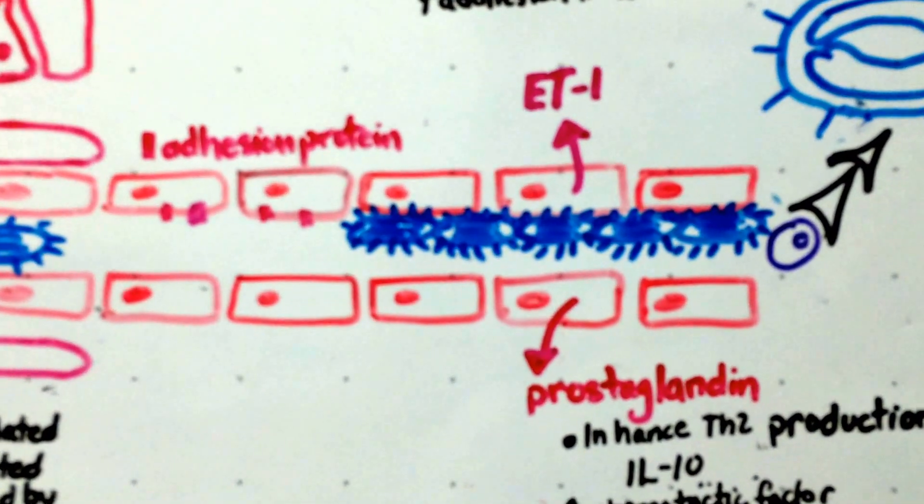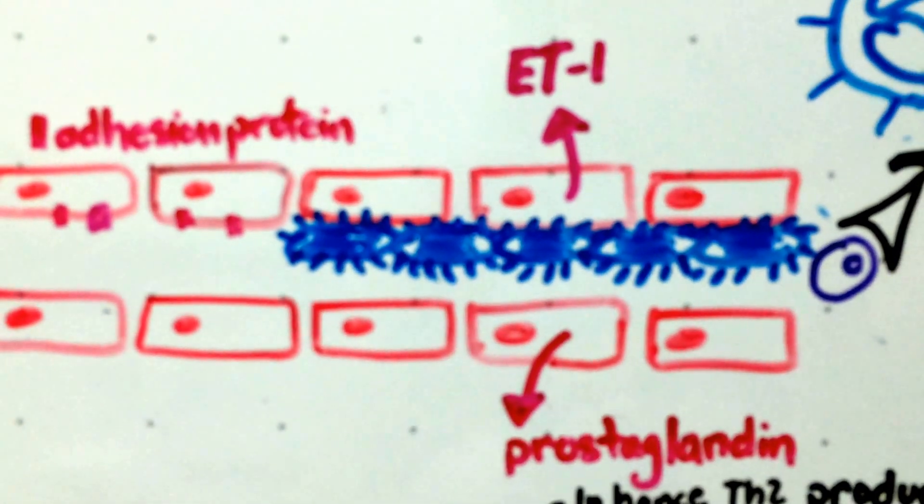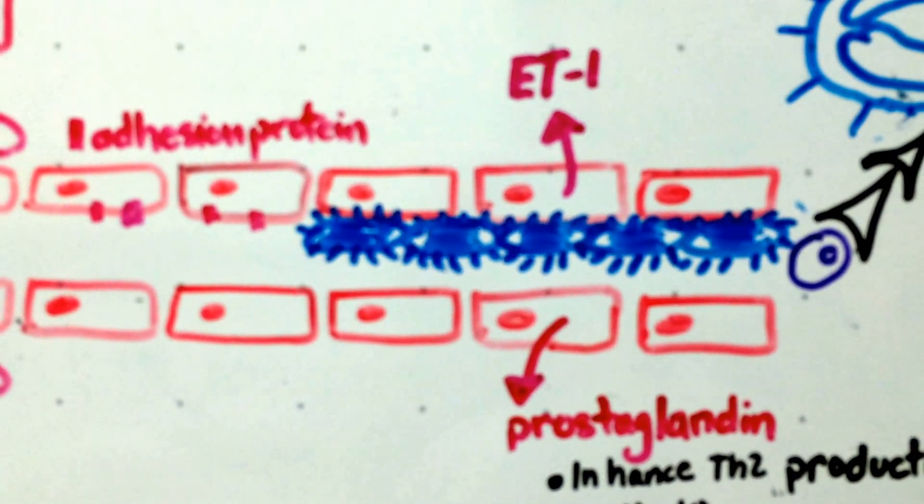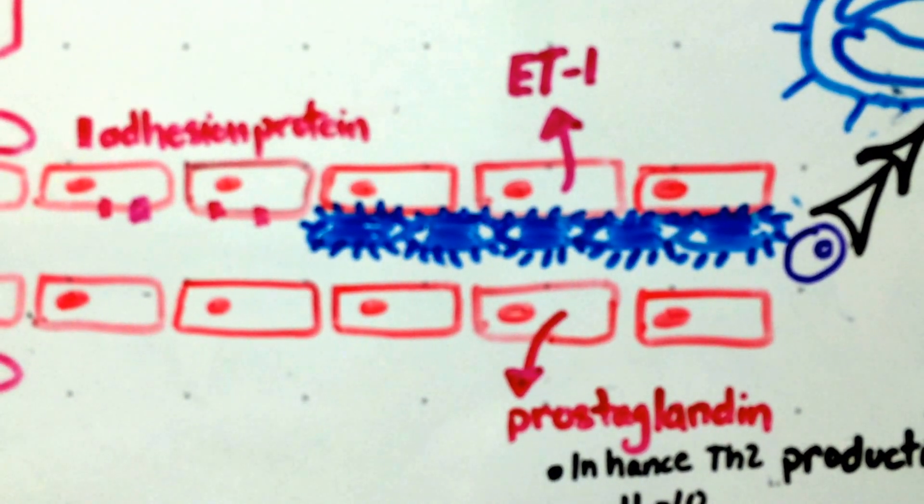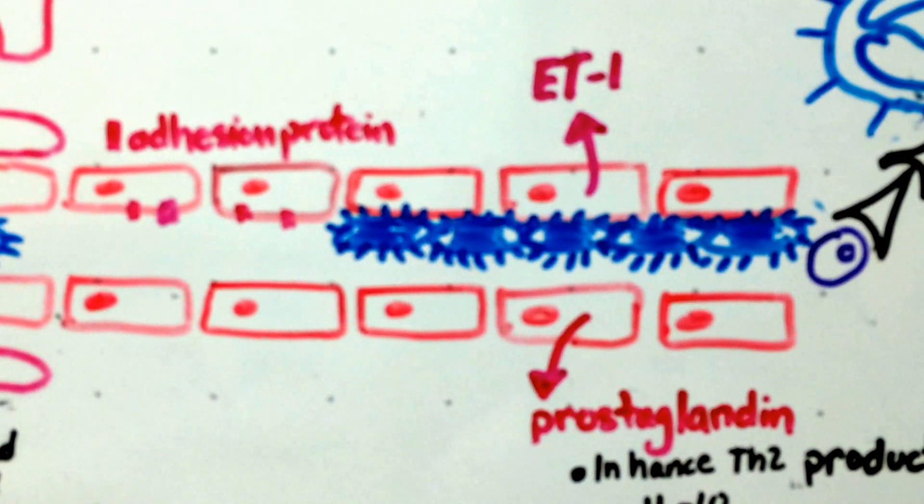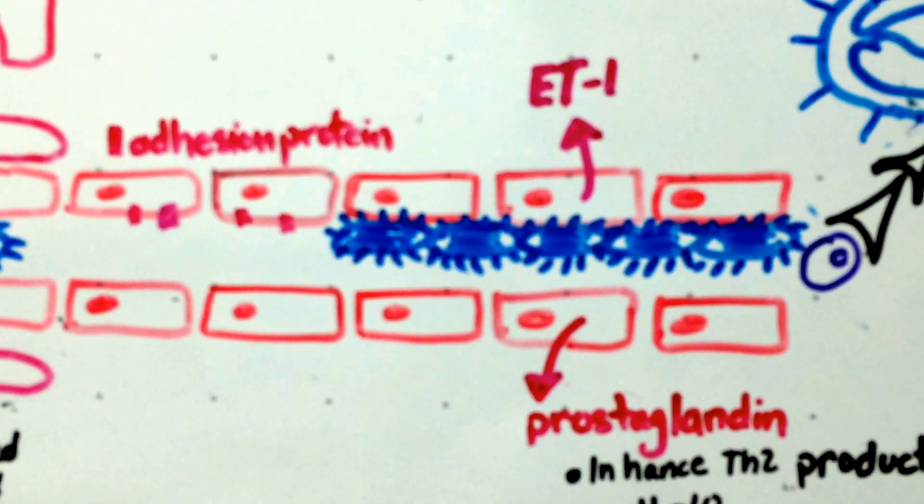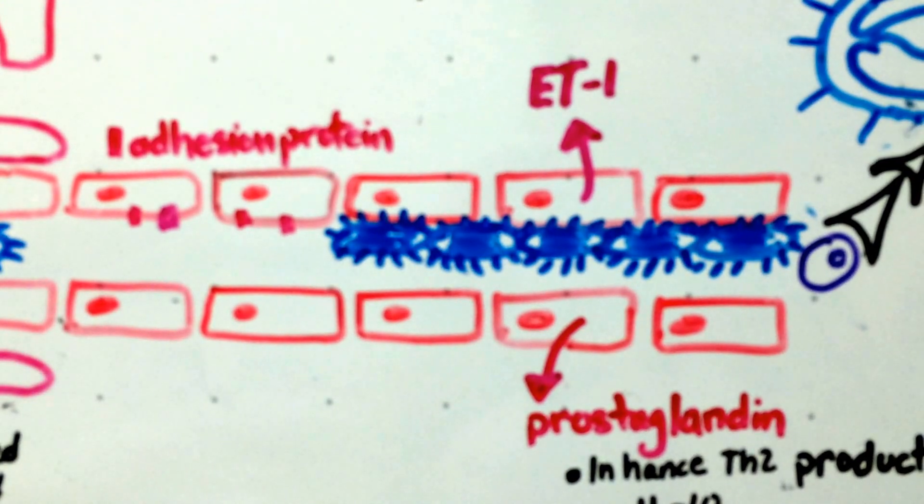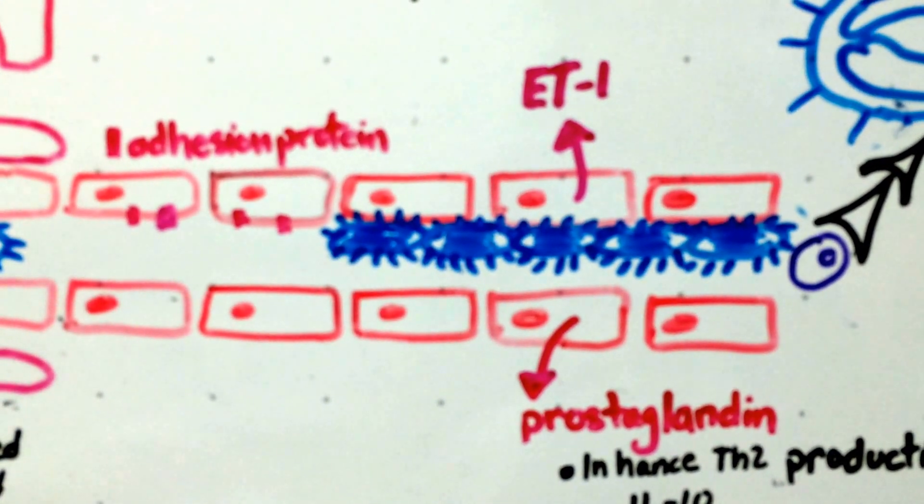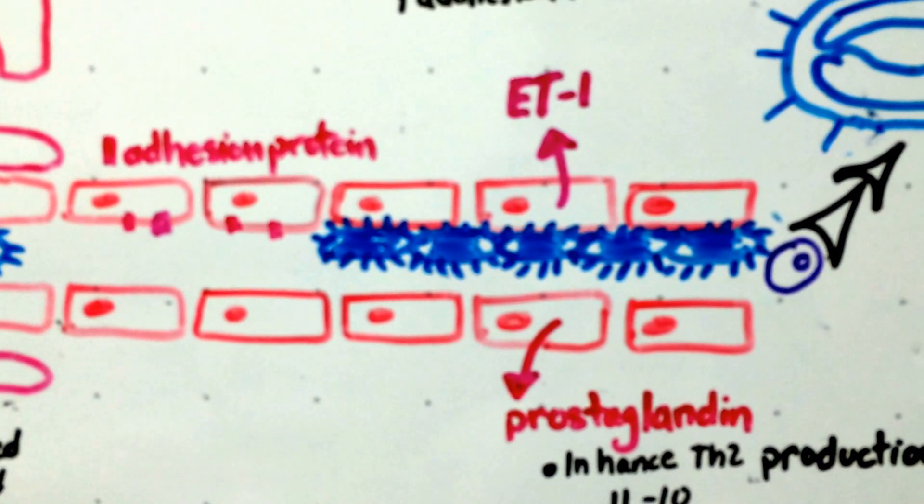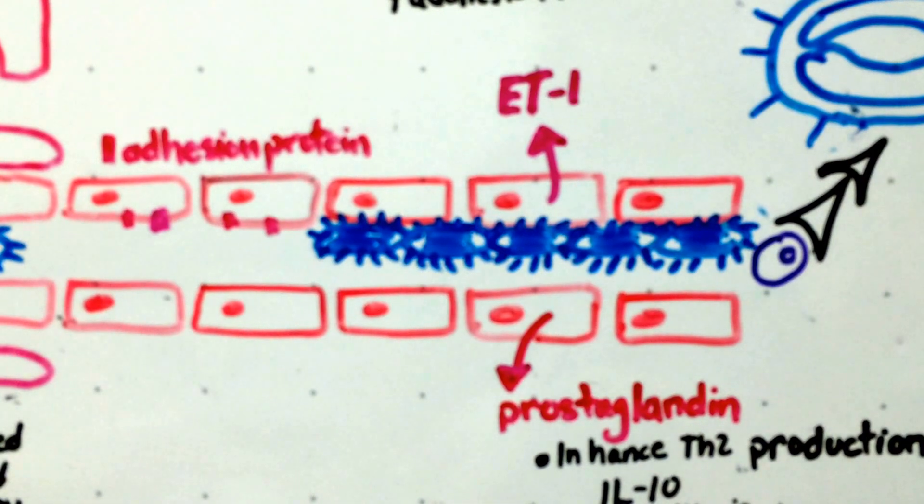So within the endothelial cells release endothelin 1, which is a vasoconstrictor. This increase in endothelin 1 causes an increase in platelet aggregation and an increase in adhesion molecules. The cells also increase their production of prostaglandin, which is thought to enhance the Th2 cell production and the release of interleukin 10.